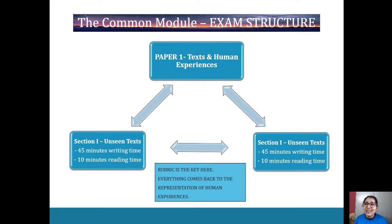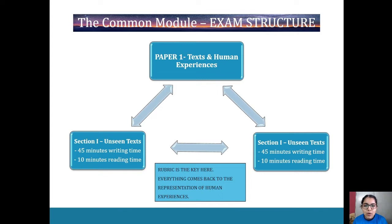Remember, the rubric is key here — everything comes back to the rubric. Unlike other subjects, fortunately we have that one rubric to go by. We don't have lots and lots of dot points to think about; you've got that one rubric telling you everything. Everything is there if you are familiar with it and know what it's asking. This module is all about representations — the representation of human experiences. You're reading the text to understand how it represents human experiences of different individuals and communities, and all the texts you study in this module do that very effectively in different ways.